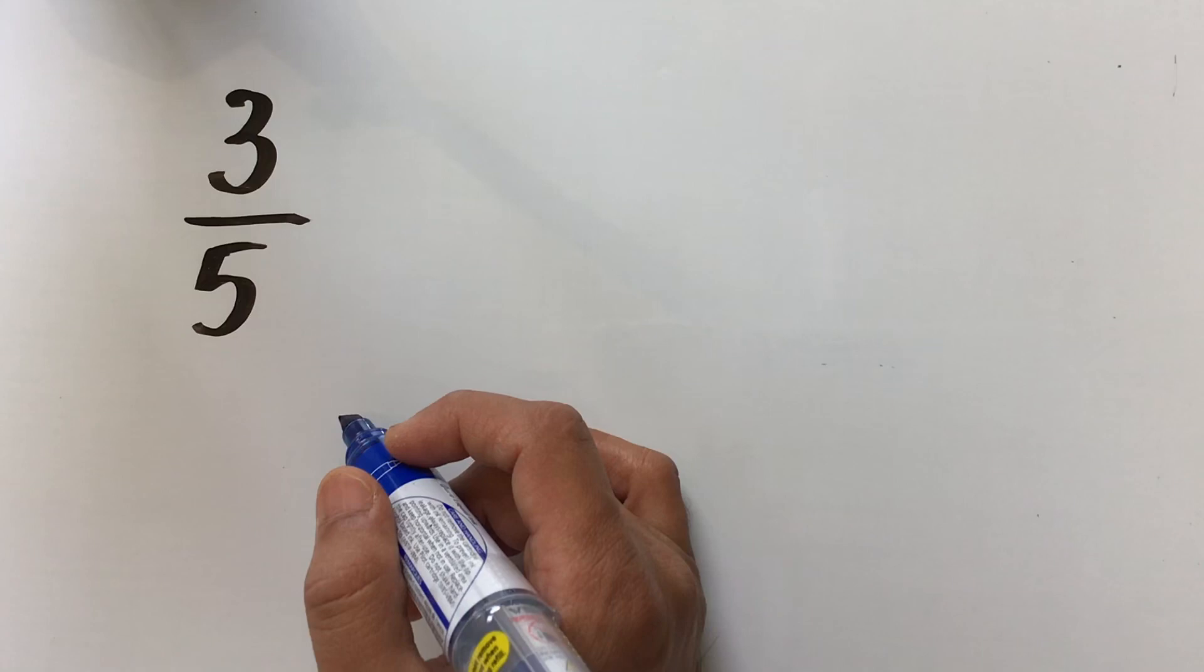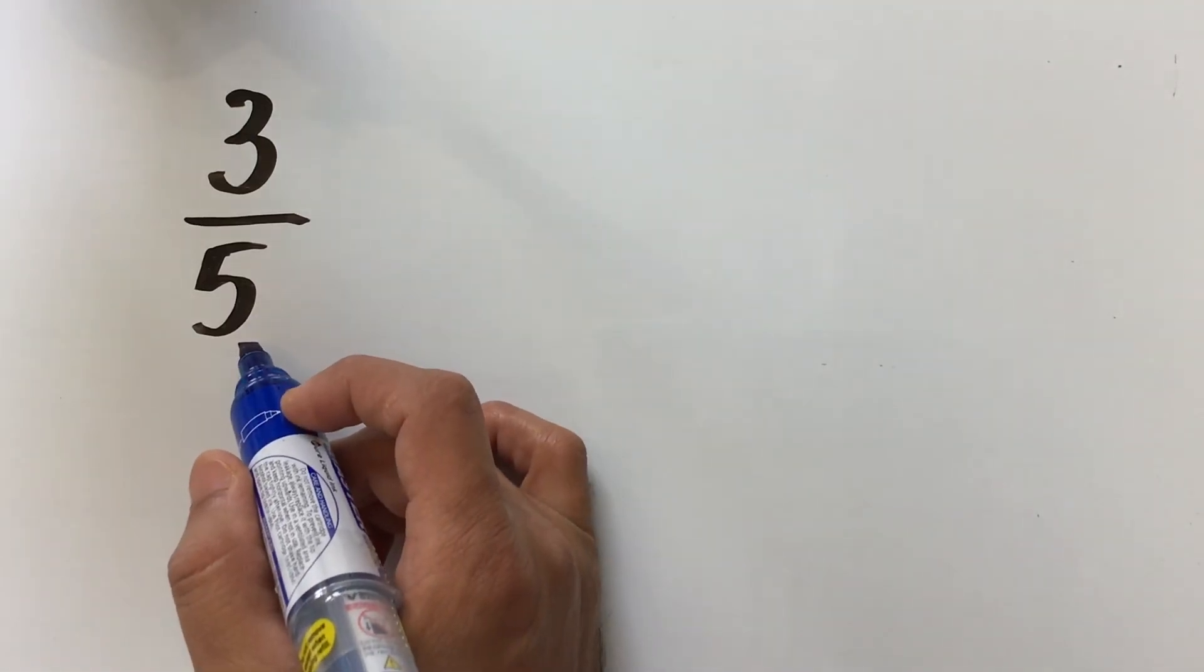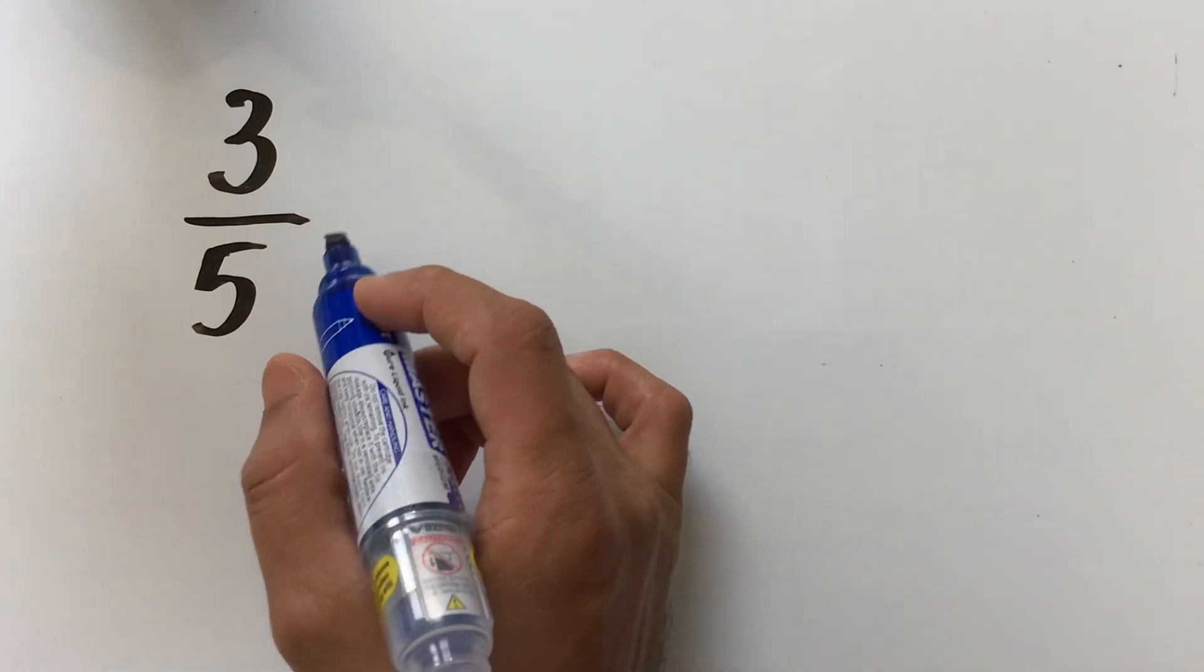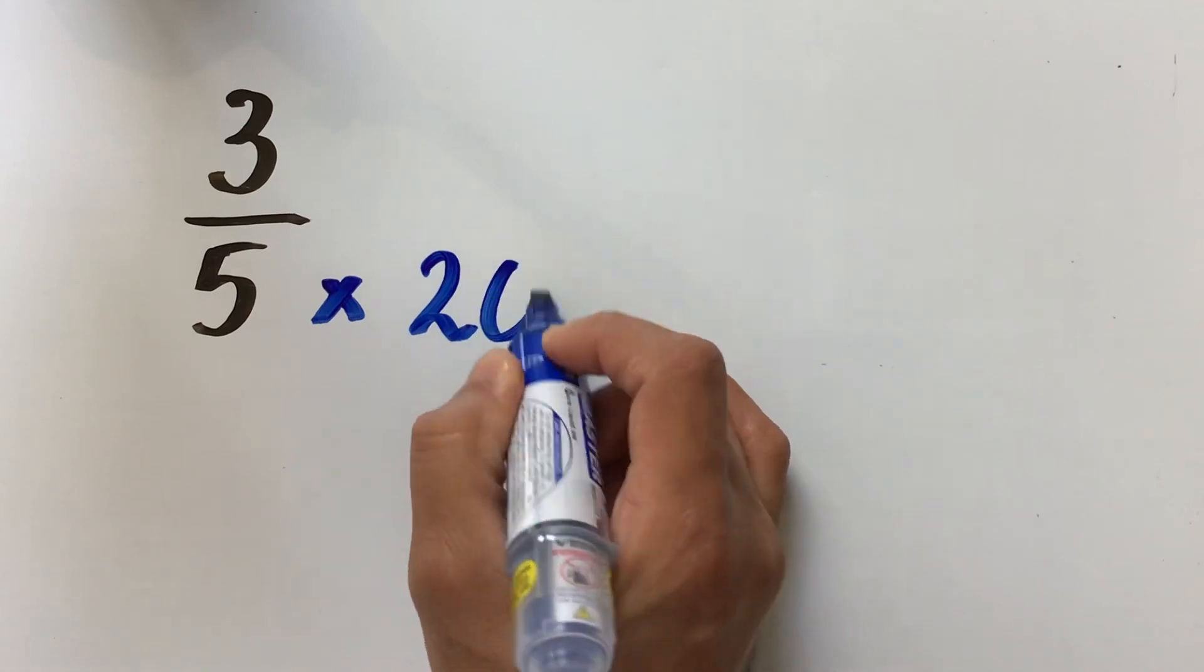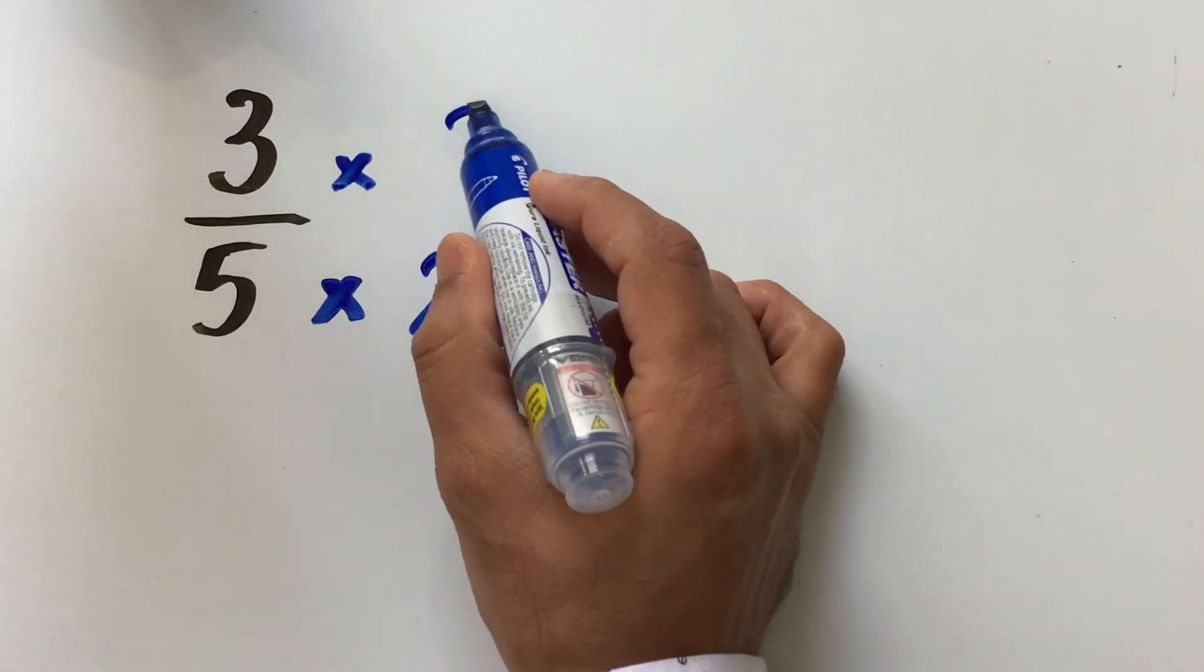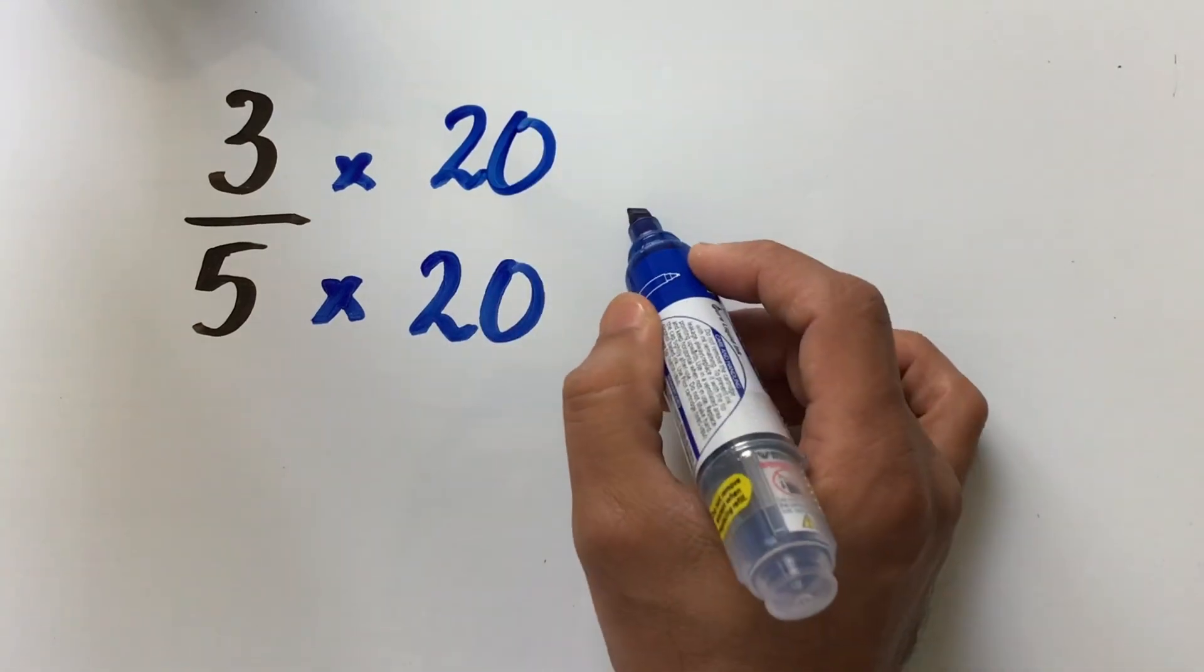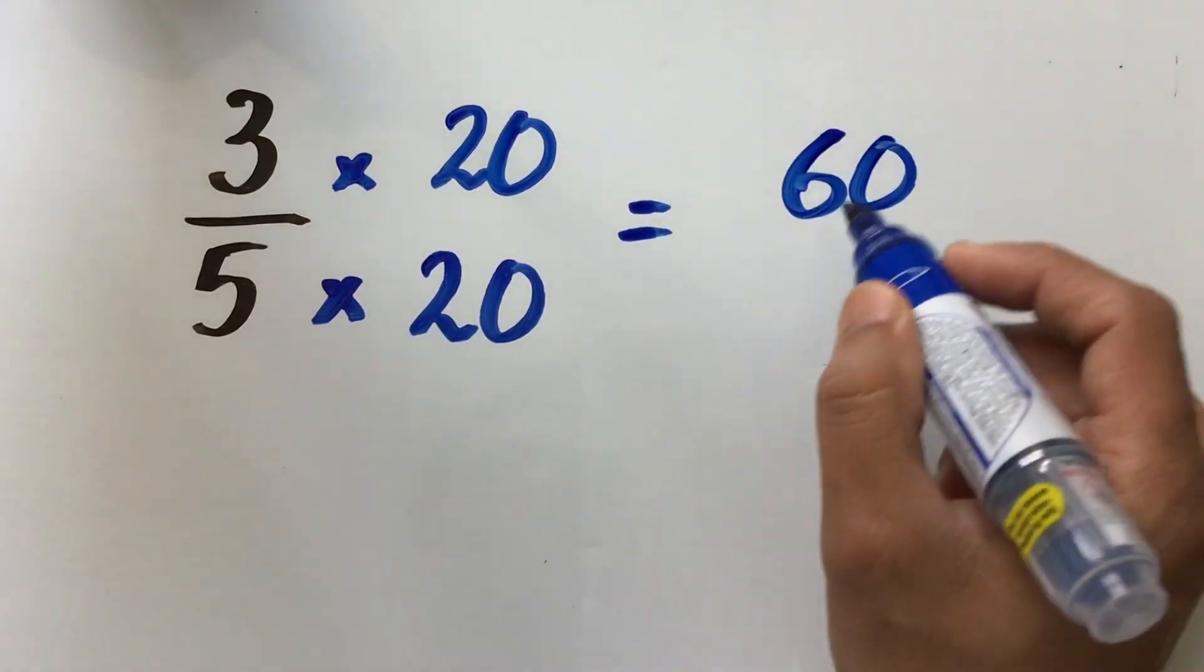In the second example, we have a fraction 3 over 5. The idea is the same. We need to convert the denominator into 100. So, if you multiply 5 with 20, which is another factor of 100, we have to multiply the numerator also by 20, which gives us a new fraction 60 over 100.